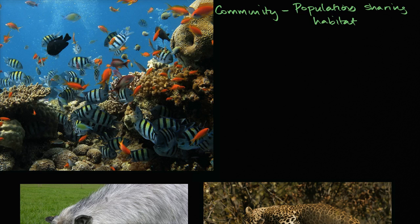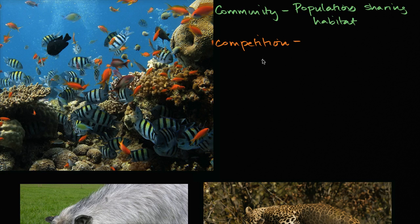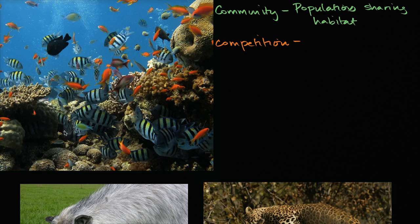The first interaction often thought about is competition. This is when different populations, different species, are competing for the same resources. You can imagine a forest where you have different populations of plants competing for sunlight, water, or nutrients in the soil. Even in this picture of a community — different populations of fish, sea anemones, and coral sharing the same region — many of them could be in competition, going after the same food or shelter.